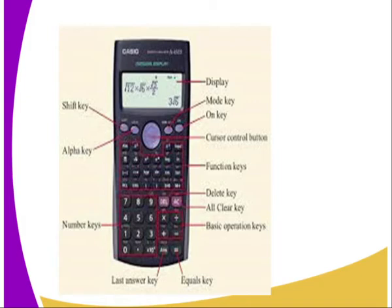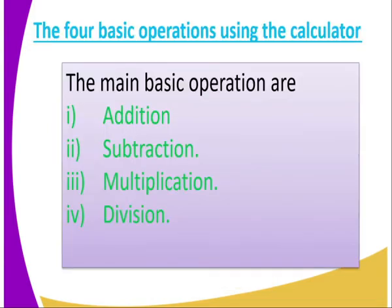Then we also have the alpha key, the numbers key that you are supposed to use, the last answer key, and the equals key. The basic operation keys include addition, subtraction, and multiplication. They are clearly indicated. If you want to clear whatever you have calculated, there is a key to clear and a key to delete. So all those are what is found in the calculator.